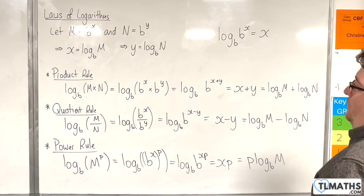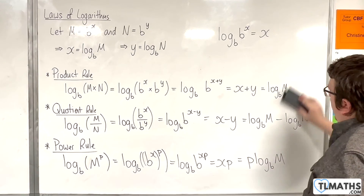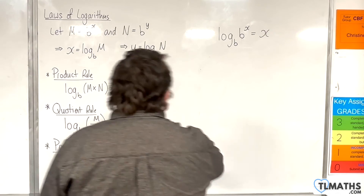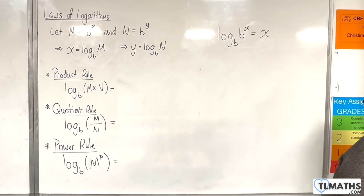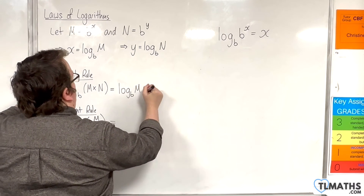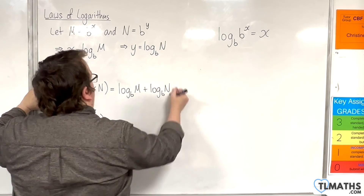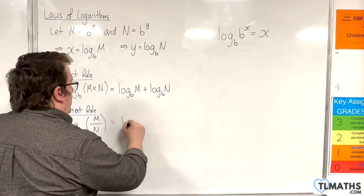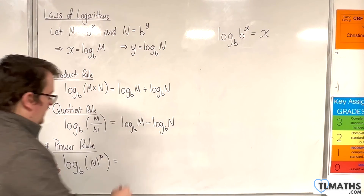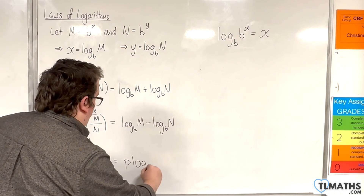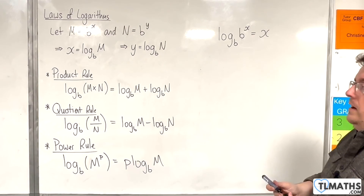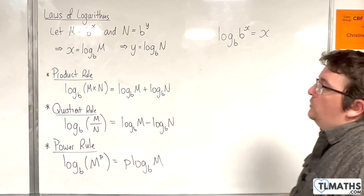So I'm just going to get rid of the working so we can see more clearly. We have the product rule: log base b of M times N equals log base b of M plus log base b of N. We have the quotient rule: log base b of M over N equals log base b of M take away log base b of N. And the power rule: log base b of M to the p equals p log base b of M. These are the three rules we need to know and be able to work with.